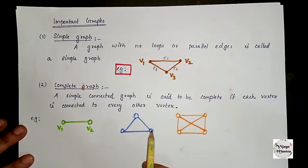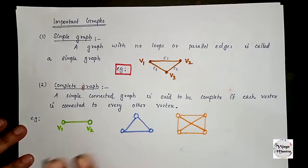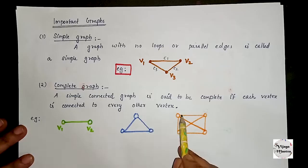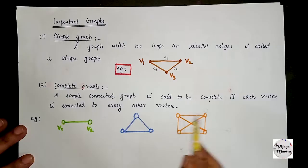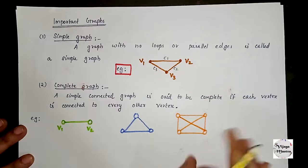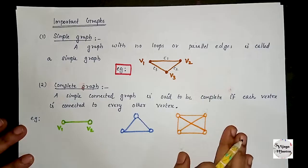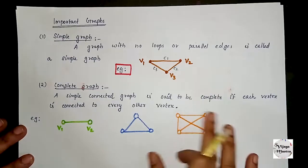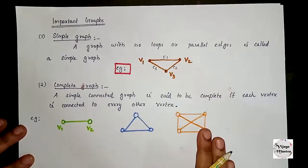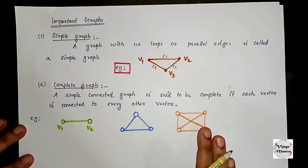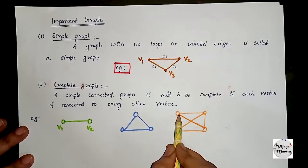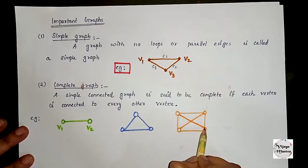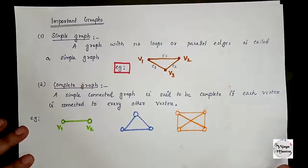You connect any two vertices; they will be connected. The complete graph connects each vertex to every other vertex. This is the complete graph example.